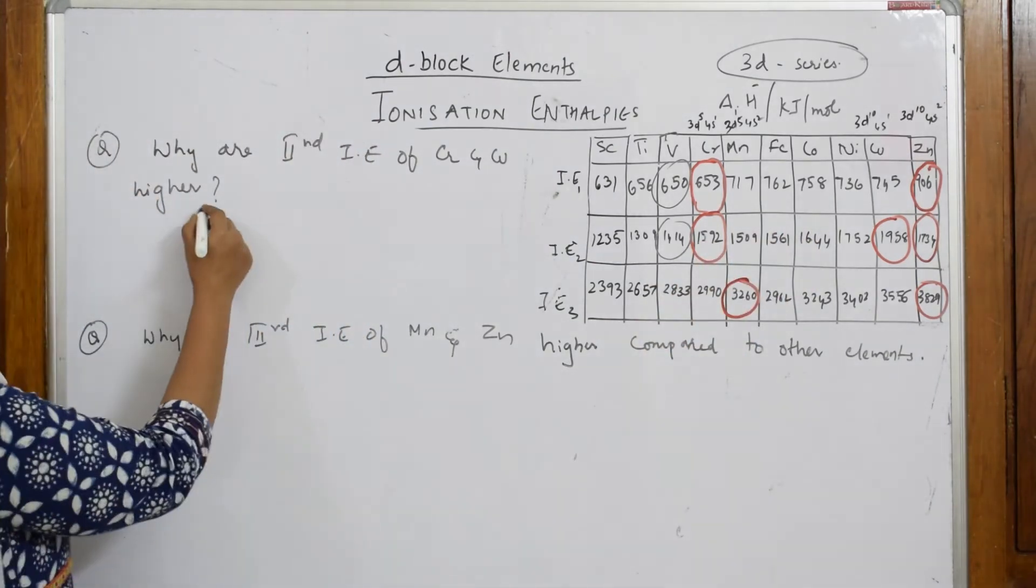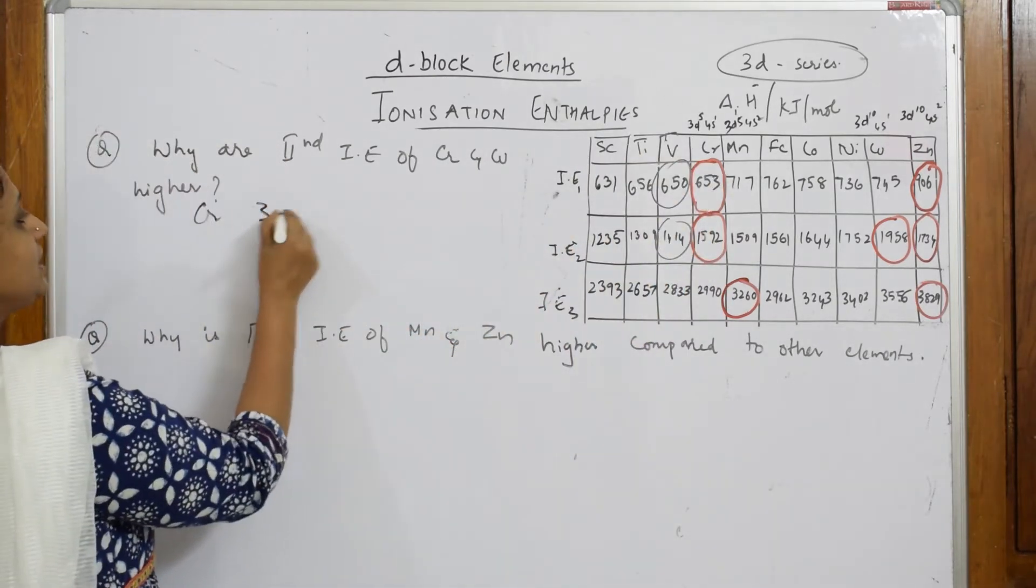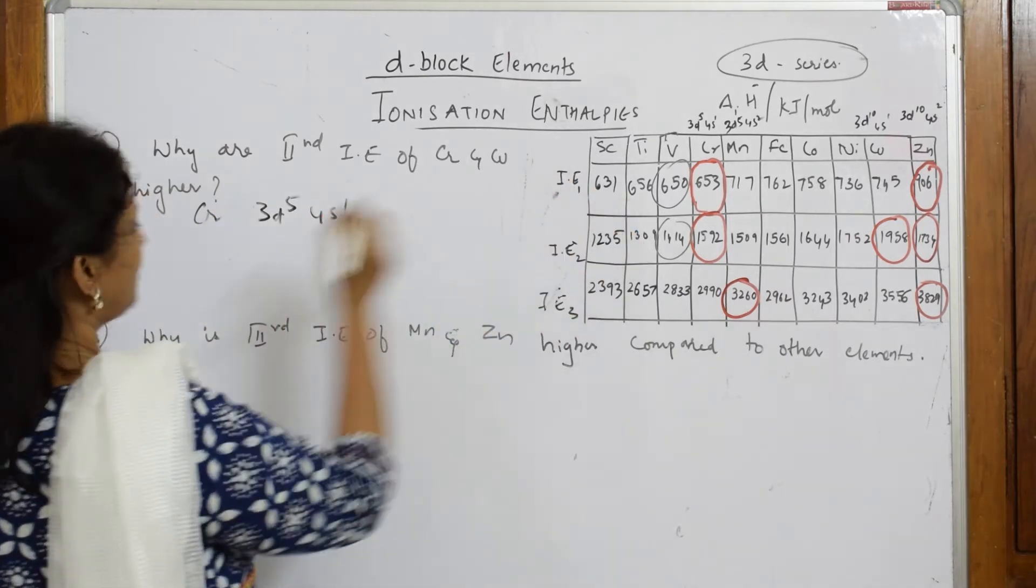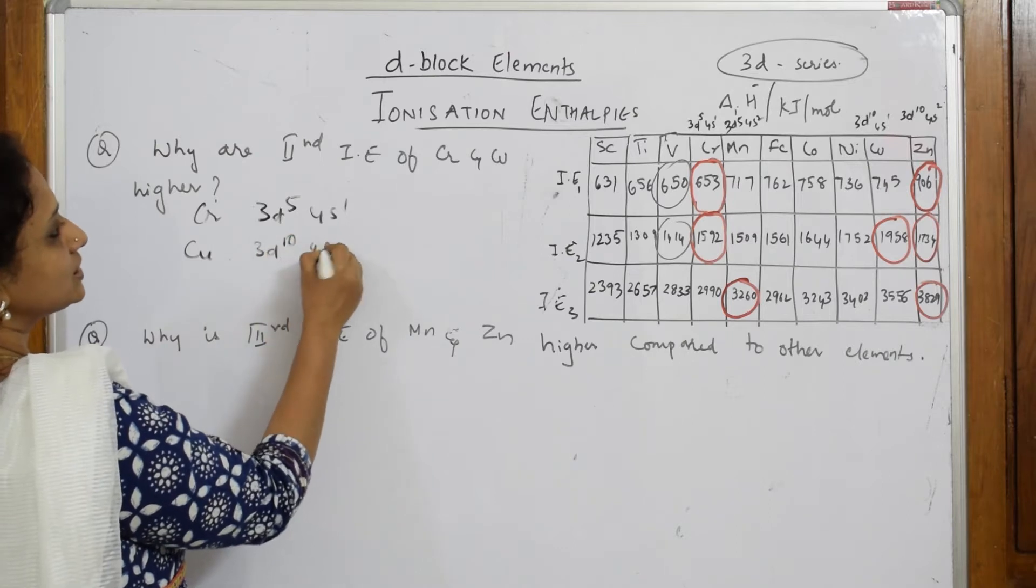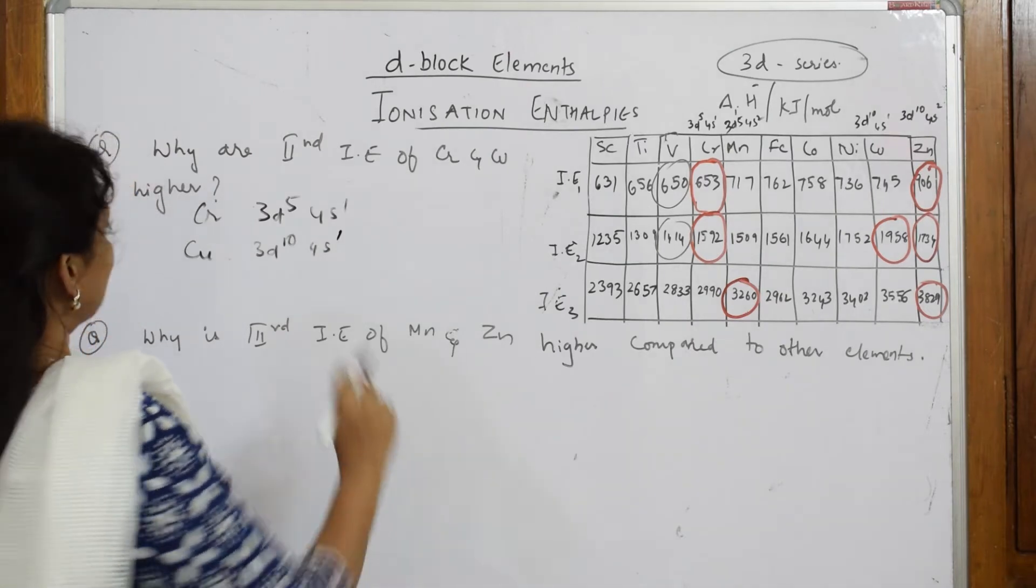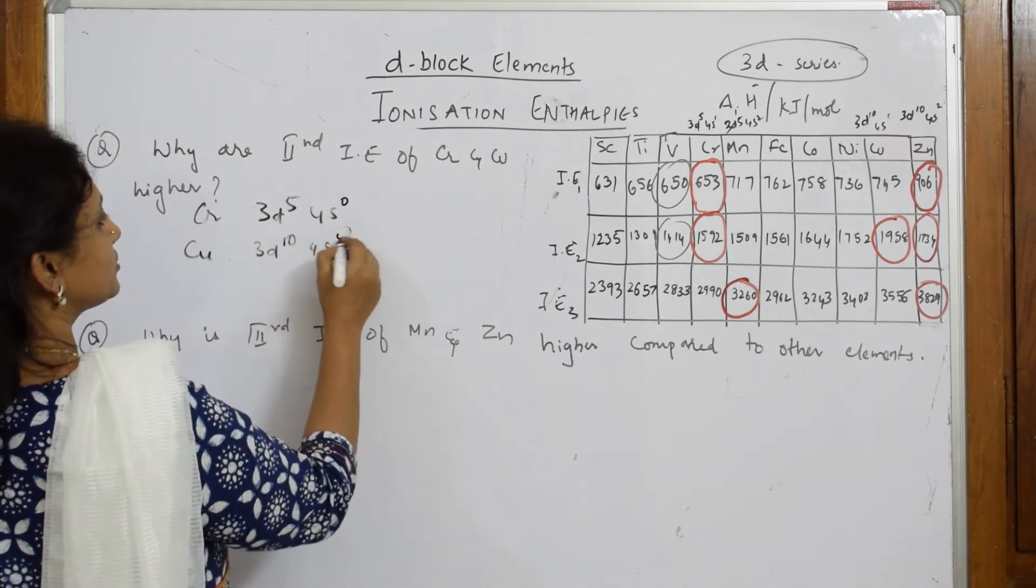Second ionization enthalpy, they said. So what is chromium? Chromium's configuration is 3d5 4s1. For copper, the configuration is again 3d10 4s1. Now what happened? They asked me for second ionization. When I'm applying the first ionization enthalpy, I'm going to remove this electron, this becomes zero, this also becomes zero. Now this is your first IE1 and IE1.